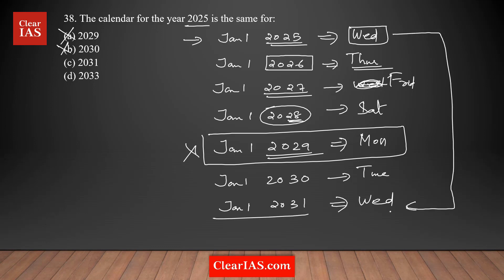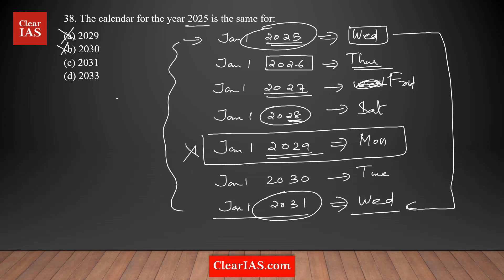That means 2025 and 2031 will definitely have the same calendar because they have the same day. This is the best way to solve this kind of question — something you can relate to and easily understand. The key idea is that in the time period between the two years, the number of odd days should be zero — that's the concept.